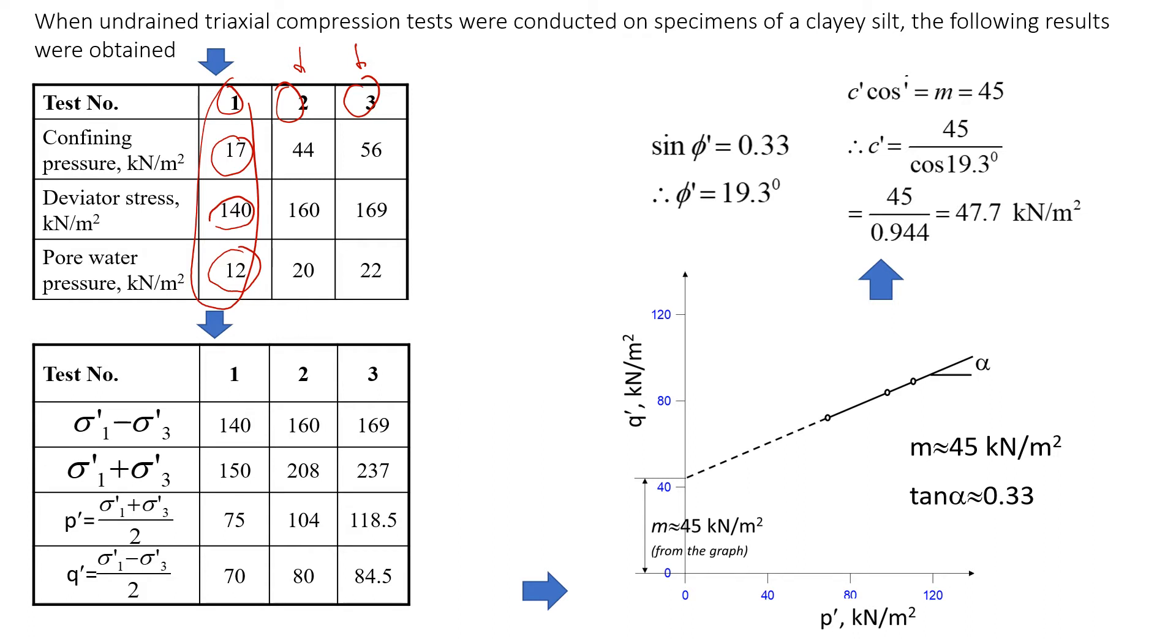This approach is a bit different. We are going to use slightly different parameters, but in the end we are going to arrive again at the friction angle and cohesion. There are a few steps that we need to follow. First we need to get these parameters which are called P' and Q'.